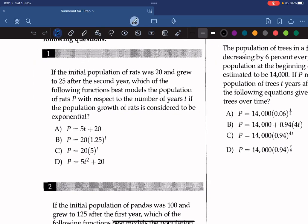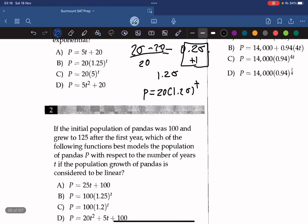Let's look at question 1 here. If the initial population of rats was 20 and grew to 25 after the second year, which of the following functions best models the population of rats P with respect to the number of years T if the population growth for rats is considered to be exponential? Since it's exponential growth, we need to calculate the percentage increase, which turns out to be 25 subtracted by 25 over 20, which is 0.25. The rate is 1.25 because you have to add 1 to the result you got here, and thus the model can be modeled by P equals 20 times 1.25 to the T. So the answer is B.